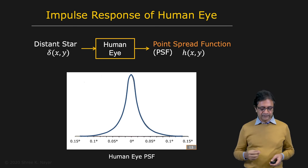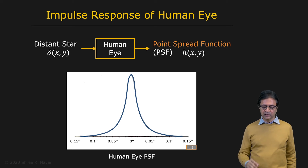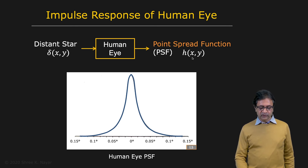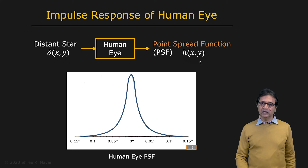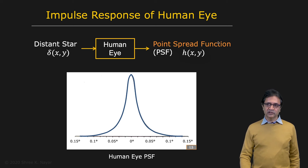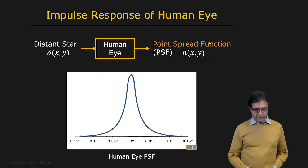And then the image that's formed on the retina is indeed your impulse response. And in the case of an imaging system, the impulse response is often referred to as the point spread function of the system — PSF, point spread function of the system.